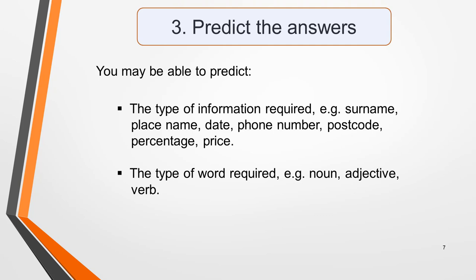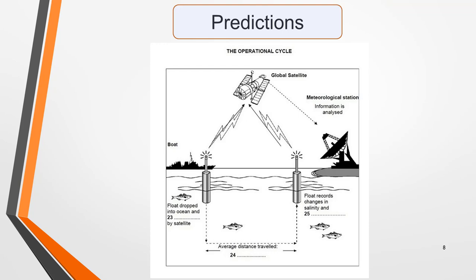The next preparation task is to try to predict what the answers might be. This will focus your mind on what to listen out for in the recording. Occasionally you'll be able to predict the actual word, but mostly it's one of these things that you'll be able to determine: the type of information required, such as a name, a number, or a percentage, or the type of word required, for example a noun, an adjective, or a verb. Any clues you can get will help you to understand the recording and identify the information needed for the answers. Have a go at predicting some of the answers in our practice question. Pause the video to do this, then have a look at my predictions on the next slide.